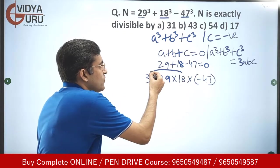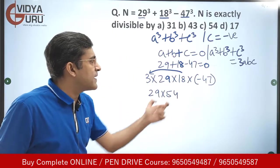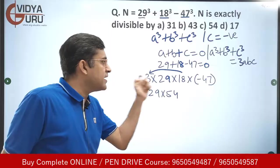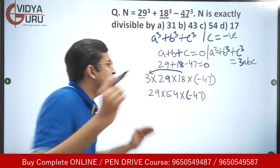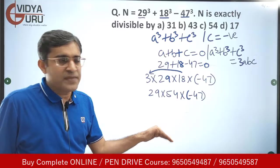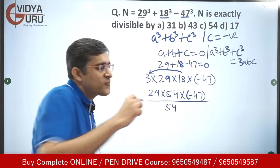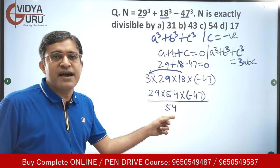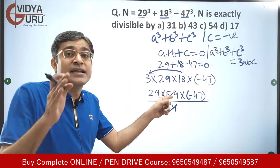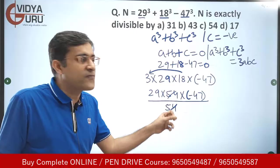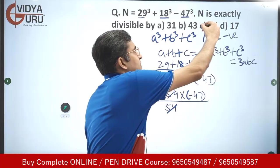We can simplify further: 18 × 3 = 54, so the expression becomes 29 × 54 × (−47). This number clearly contains 54 as a factor, so it is exactly divisible by 54. Dividing by 54 leaves 29 × (−47). So 54 is the answer.